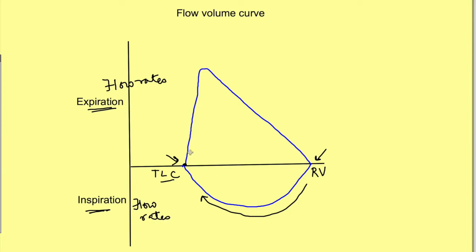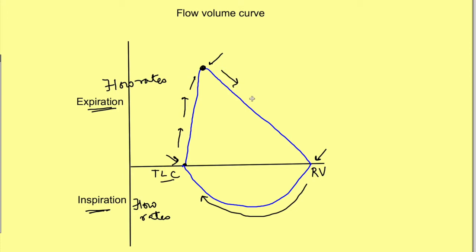In this graph, the person starts exhaling from total lung capacity and the flow rate continuously increases up to a maximum limit. Even when the person is putting maximum pressure and trying to exhale maximally, the flow rate reaches a certain limit and cannot increase any further, even with more effort. After this, the flow rates start decreasing. Why is there a particular maximum flow rate?